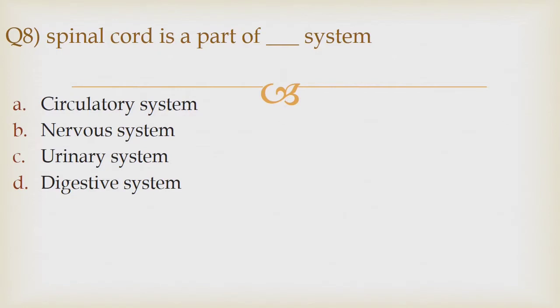Question number 8. Spinal cord is a part of dash system. Option A: Circulatory system. Option B: Nervous system. Option C: Urinary system. Option D: The adjusted system. The correct answer is option B: Nervous system.